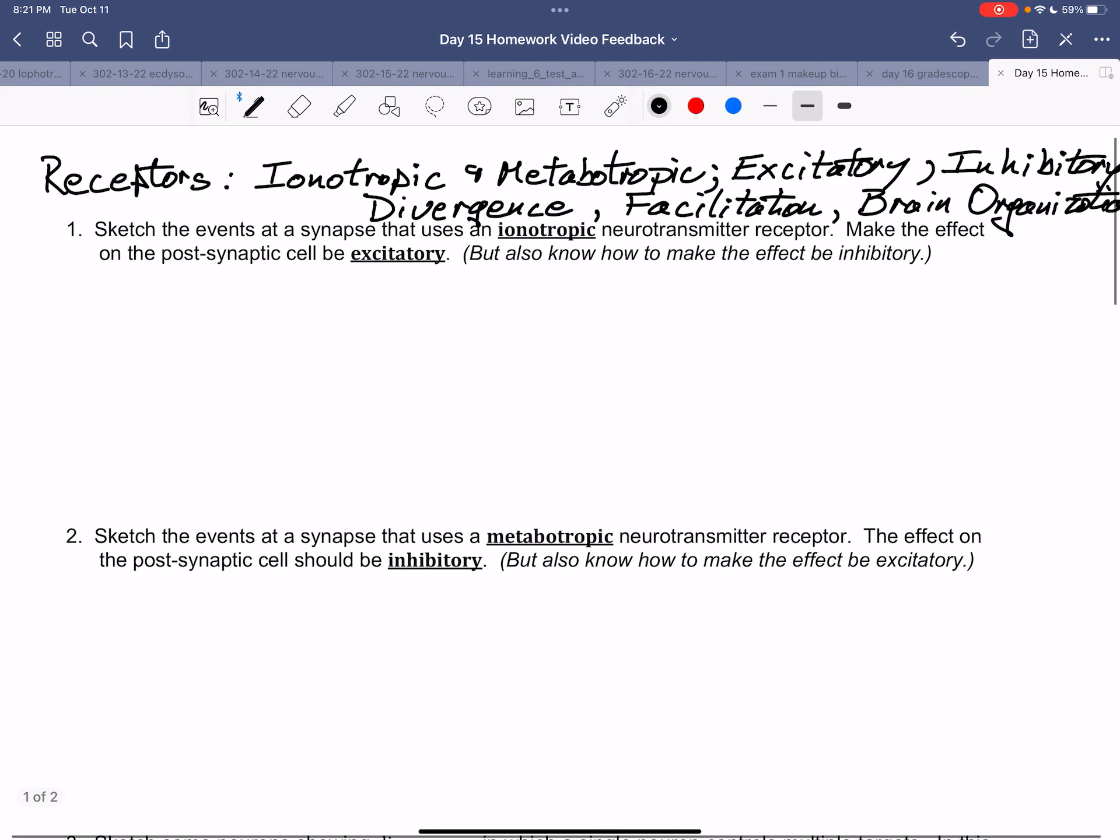First, events at a synapse that uses an ionotropic neurotransmitter receptor. So we start with the presynaptic neuron.